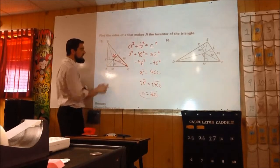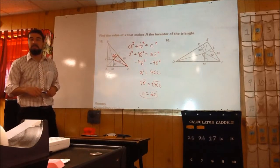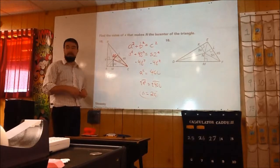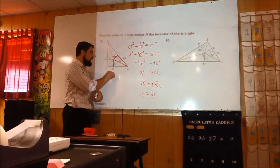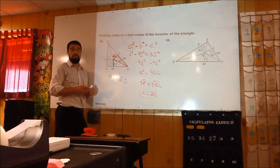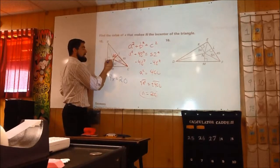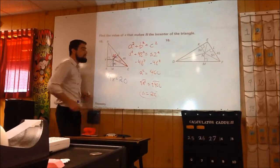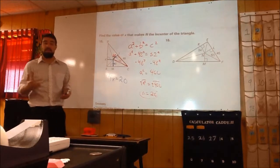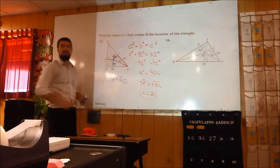4X is representing this length here — that's N, the in-center, down to point M, the perpendicular distance. Because of the in-center theorem, all three distances from the in-center to all three sides of the triangle are equal. So since that side length is 20, that means 4X equals 20, and X equals 5.